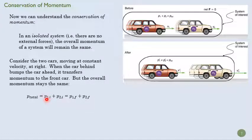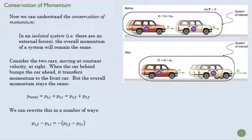Momentum of car one plus the momentum of car two initially, that's what that little i means, is equal to that same sum in the final state. That's what the little f means. We can rewrite this in a whole bunch of different ways, right? We can say, okay, just take this part of the equation and we get this. This is the change in momentum of the first car. This is the change in momentum of the second car.